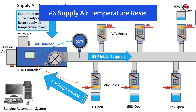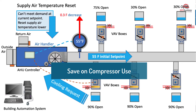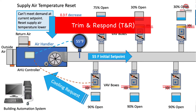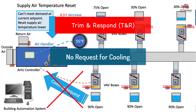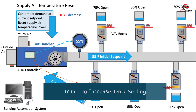Number six: supply air temperature reset. To save energy, the supply air temperature can be reset higher when the demand is reduced. This will save on compressive energy use and allow more time for the use of the air side economizer. Using trim and respond control logic, if no request for cooling is sent to the air handler controller, then the supply air temperature is trimmed by a set value determined by the programmer.